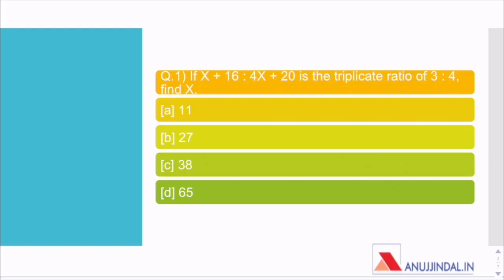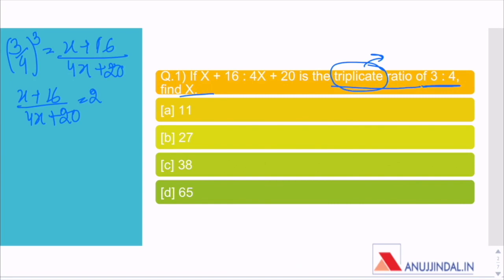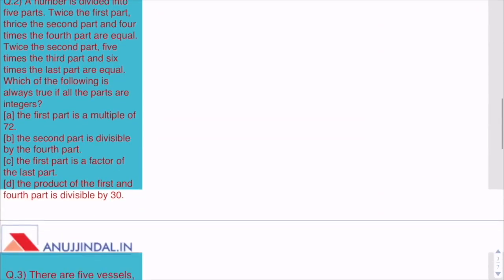Question 1: If x plus 16 to 4x plus 20 is the triplicate ratio of 3 to 4, then find x. In this question it is given the triplicate ratio of 3 to 4. Many students confuse this with thrice of the ratio. No, it's not thrice. What triplicate means is 3 by 4 cubed. Triplicate means 3 copies. So if you know this, solving such questions becomes very easy. On solving this, you get the value of x which is 11.